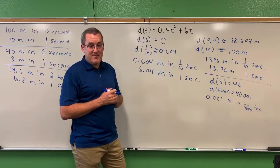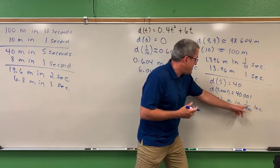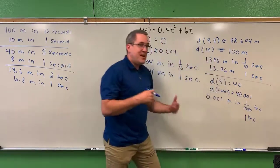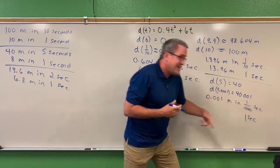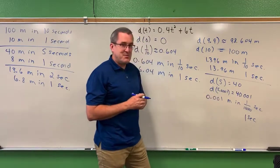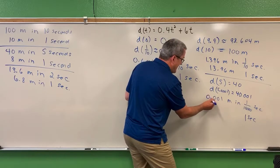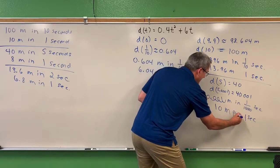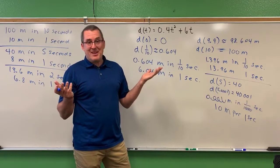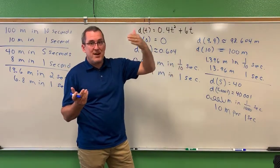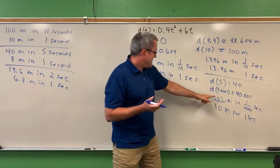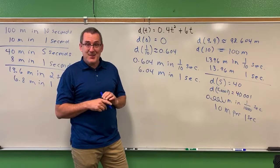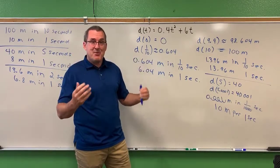We have proportional reasoning to apply. One ten-thousandth of a second scaled up to one full second requires multiplying by 10,000. So the distance scales up by 10,000 as well: 0.001 meters times 10,000 gives us 10 meters in one second. We can do this at any moment in time — find where he was, find where he was an instant later, determine how far he ran in that time, scale it up, and report his speed at that moment.